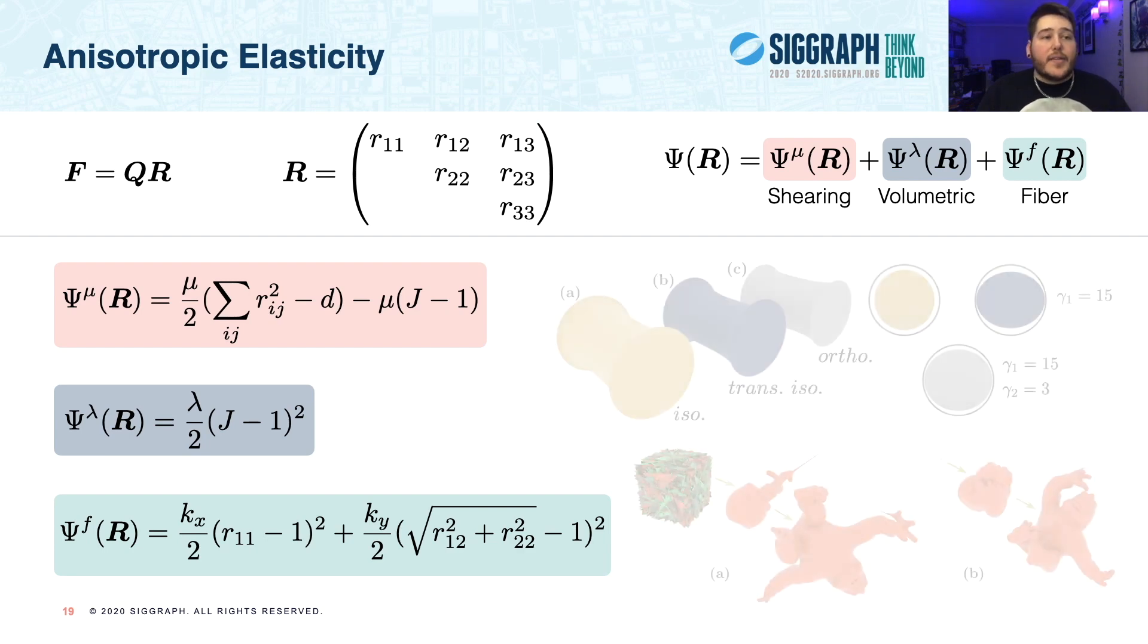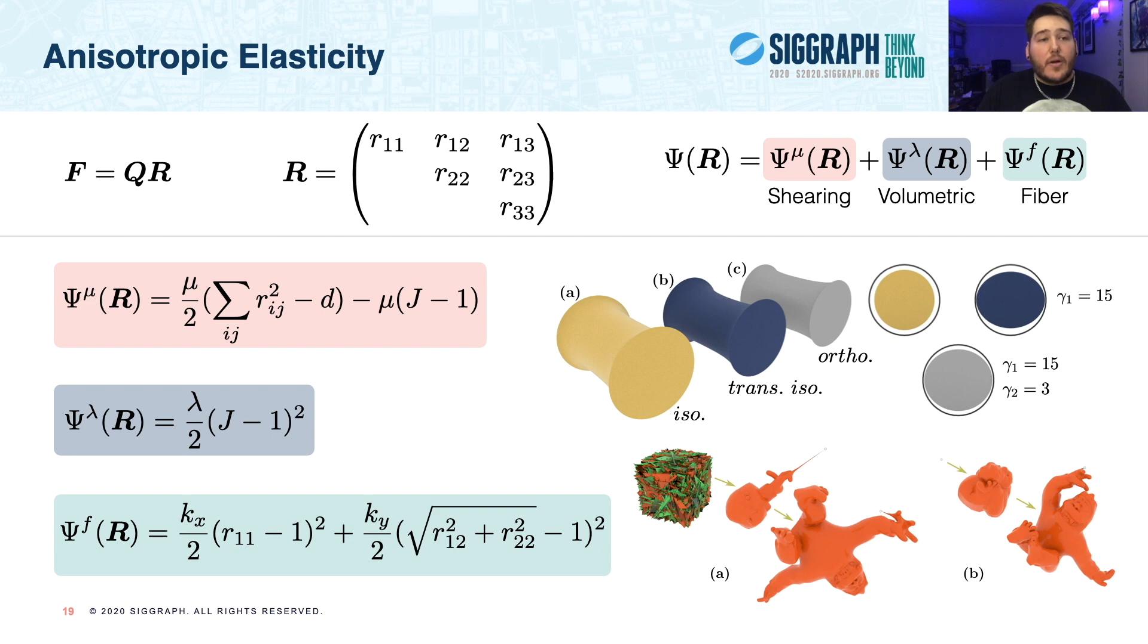And in this way, we enable anisompm to model all modes of anisotropy by simply setting these gamma values. At right, we pull on some anisotropically elastic tubes and display their cross sections. Notice that the isotropic tube contracts the same in every direction. The transversely isotropic tube shows less compression in the principal fiber direction. And finally, the orthotropic material shows that we can further scale the secondary fiber direction for less compression in that axis.